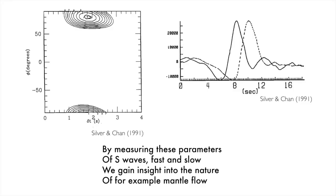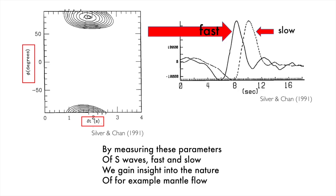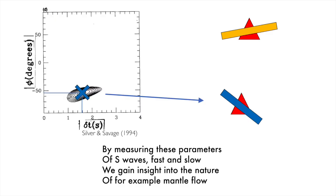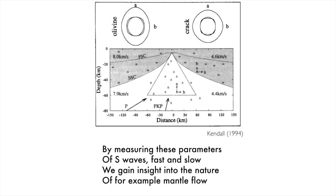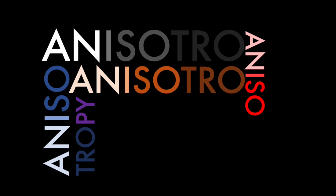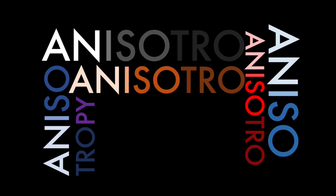By measuring these parameters of S waves — fast and slow — we gain insight into the nature of, for example, mantle flow. Anisotropy.